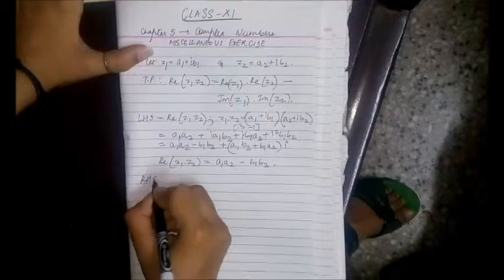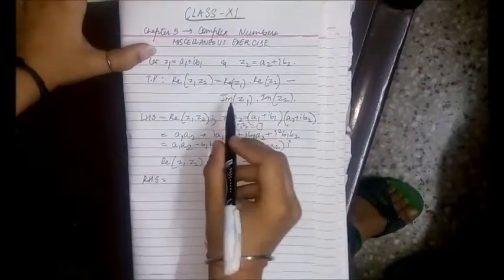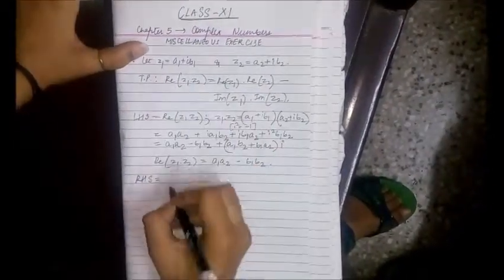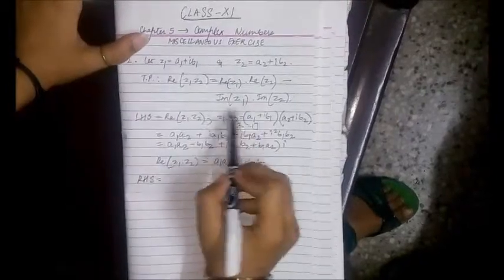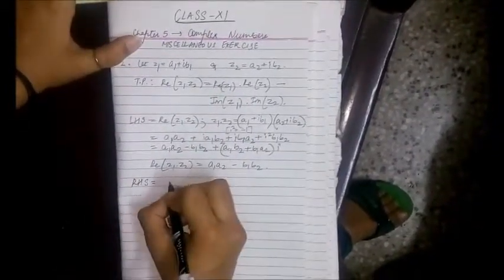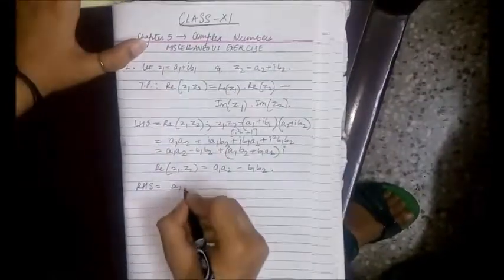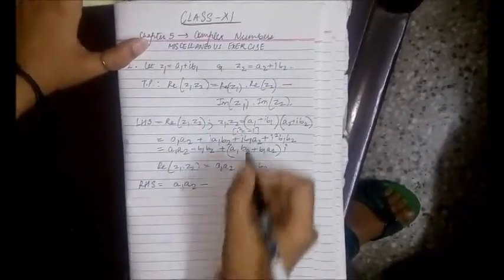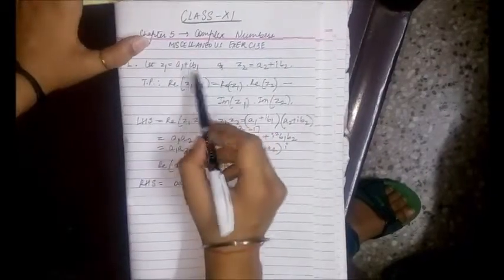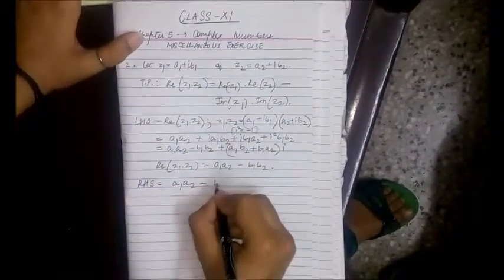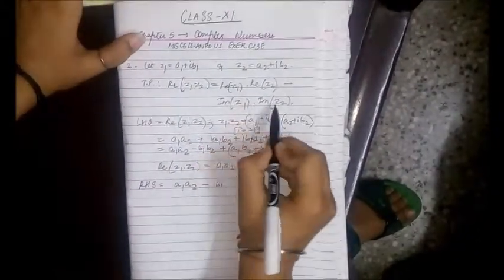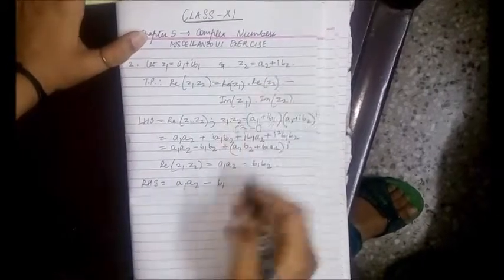RHS is the real part of Z1, that is A1, into the real part of Z2, that is A2, minus the imaginary part of Z1, that is B1, into the imaginary part of Z2, that is B2. Now comparing LHS and RHS, are they the same? Yes, since LHS is equal to RHS, hence proved.